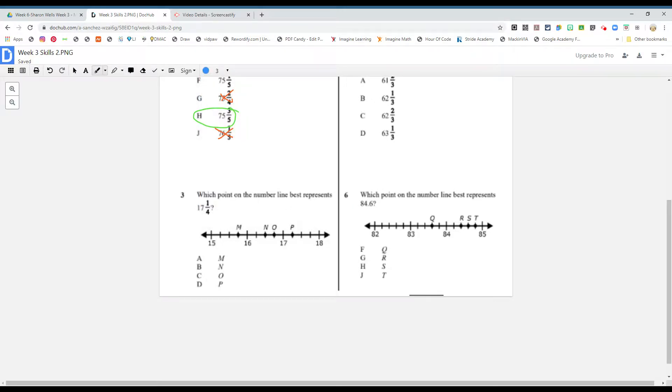Says which point on the number line best represents 17 and 1/4. Again boys and girls, it's just a fraction bar that we're gonna create. I already know the answer though, because look at the whole number boys and girls, 17. The whole number is 17 and something. Well, the M is 15 and something, no thank you. The N and the O is 16 and something, no. Only one that's 17 and something is the P, so that's your answer. But we're still gonna do our strategies boys and girls.